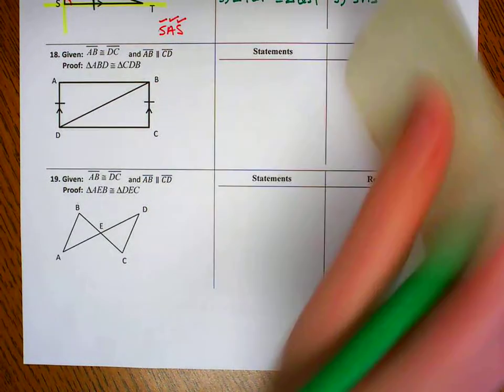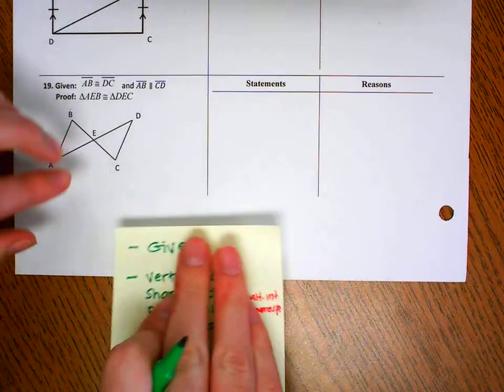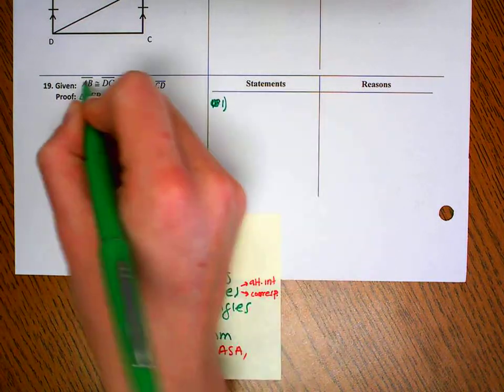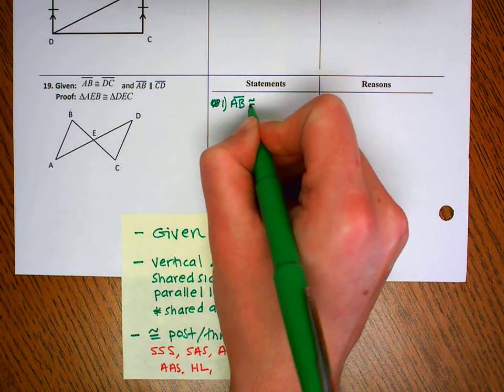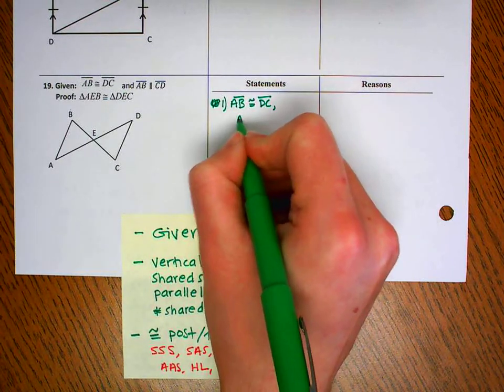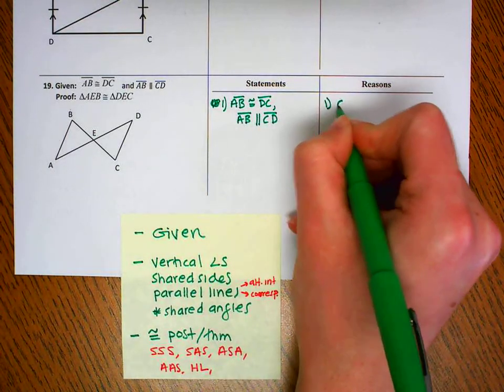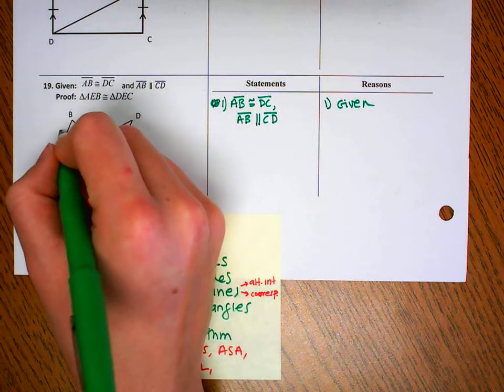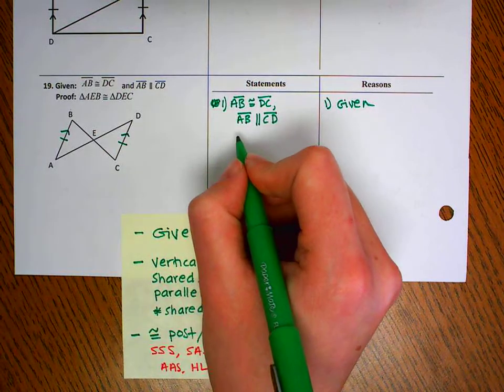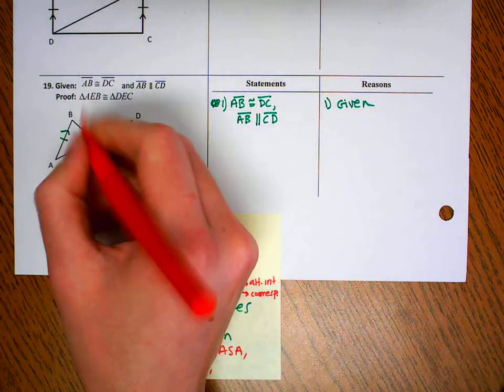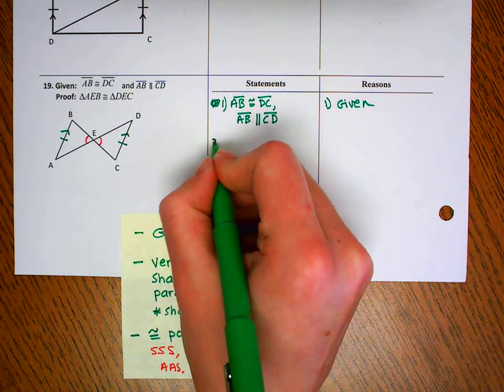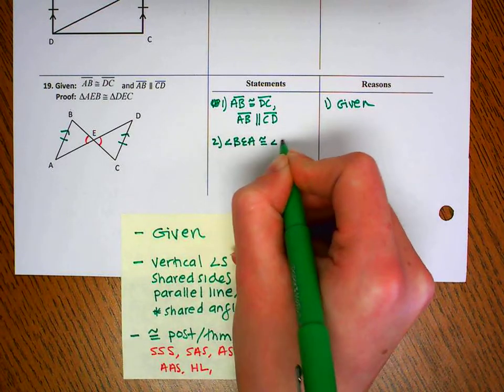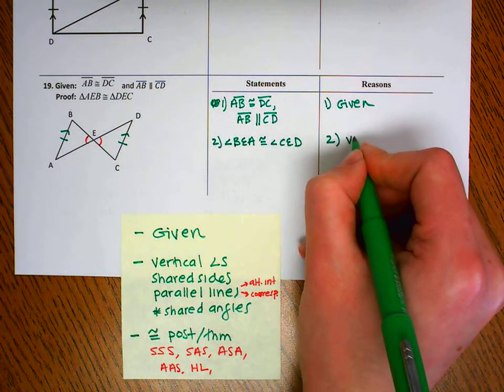Here's our last one. Start by writing all of our given information. Segment AB is congruent to segment DC. And segment AB is parallel to segment CD. That's given. Let's mark it in our picture. So segment AB is congruent to segment DC. AB is parallel to DC. Okay, let's go through our checklist. Vertical angles, yes. So that's the vertical angles theorem.